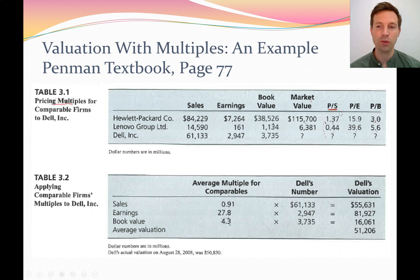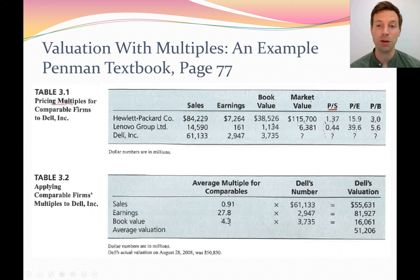If you haven't come across these ratios before: a price to sales ratio takes the market value of the company — the number of shares times the share price, giving the market capitalization — and divides it by the sales revenue. Hewlett Packard have a market value of $115,700 million, and dividing by their $84 billion in sales revenue gives a price to sales of 1.37. The price to earnings ratio uses market value divided by the firm's net profit, giving HP a PE ratio of 15.9.